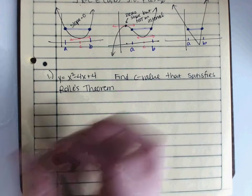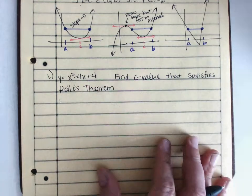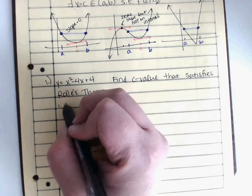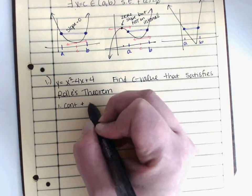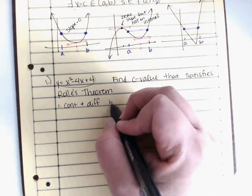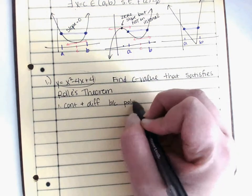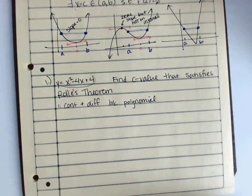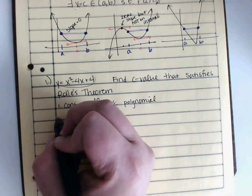Find the c value that satisfies Rolle's Theorem. The first thing that I'm going to do is check that my function is, as stated here, both continuous and differentiable. I know that it is because it's a polynomial. Remember that all of your polynomials are going to be safe.